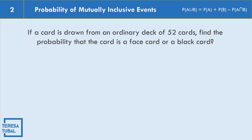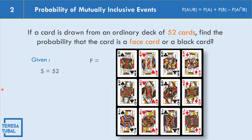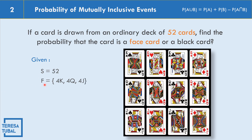Example number 2: If a card is drawn from an ordinary deck of 52 cards, find the probability that the card is a face card or a black card. The sample space equals 52. The face cards: we have 4 kings, 4 queens, and 4 jacks — because we have spade, hearts, club, and diamond — so total number of face card elements equals 12.